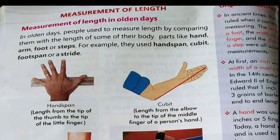Next is measurement of length, यानि length को हम कैसे measure करेंगे? Measurement of length in olden days — पुराने जमाने में कैसे length को हम measure करते थे? In olden days, people used to measure length by comparing them with the length of some of their body parts like hand, arm, foot, or steps. पुराने दिनों में, लोग अपने body parts से किसी भी चीज़ के length को measure करते थे, जैसे अपने hand से, अपने arm से, foot से, या पैरों के steps से.